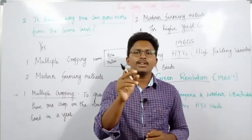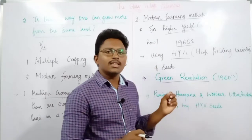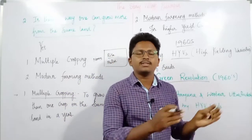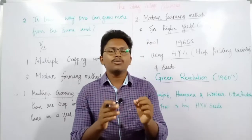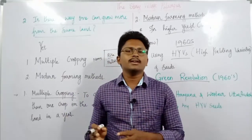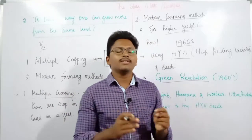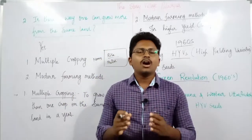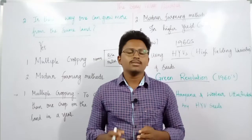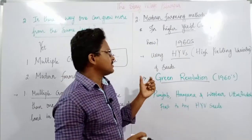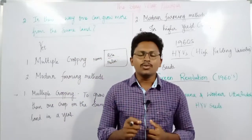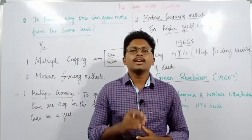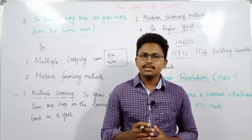After using HYV seeds there was a lot of improvement in production. Before HYV seeds, farmers using traditional seeds used to get only 1,300 kg output, but now it has improved to 3,200 kg — a huge change in production, all because of HYV seeds. So farmers slowly started adopting HYV seeds in their farming methods to improve their production.